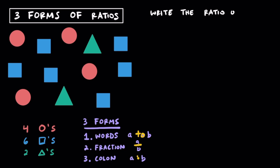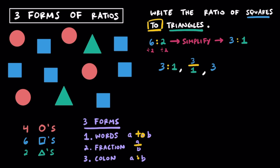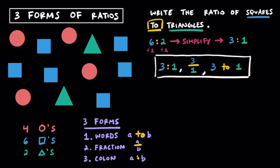Now let's write the ratio of squares to triangles. Since squares come first, we start with 6 squares, then 2 for 2 triangles. Since we can simplify by dividing both by 2, we get the ratio 3 to 1 — 3 squares for every 1 triangle. We can write it with a fraction bar, with a colon, and using words. All three mean 3 to 1. This is again a part-to-part ratio, since they don't make up all the shapes.